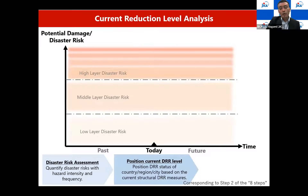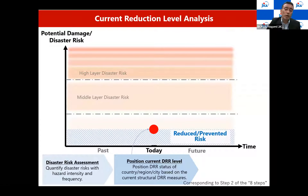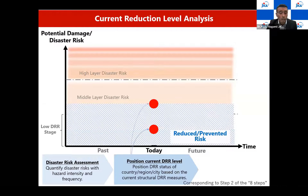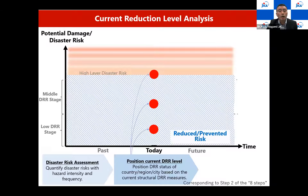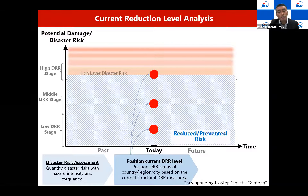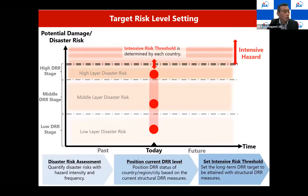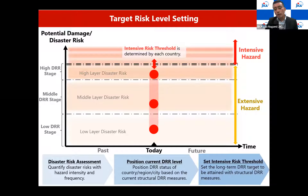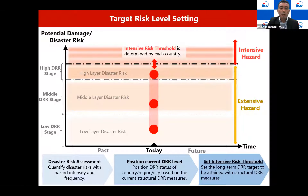The second step is understanding where we are now for disaster risk reduction. We must position our current situation in terms of reduced risk at lower, middle, and higher levels. We also need to target the ultimate goal of disaster risk reduction, particularly for structural measures — the borderline between extensive risk and intensive risk — which reflects the country's strategy and philosophy for dealing with disaster risk.